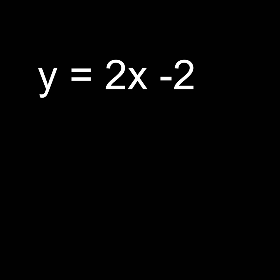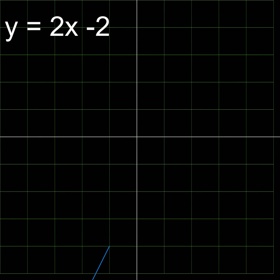Alternately, you can take everything to one side and call it y, then plot the graph of y versus x and see where y equals 0. We can see that that happens when x equals 1.